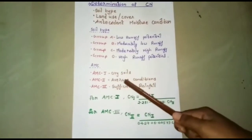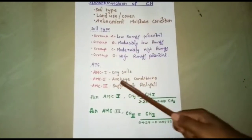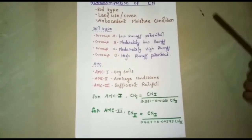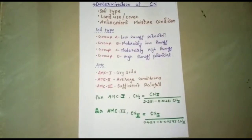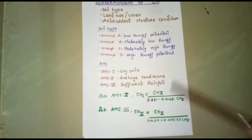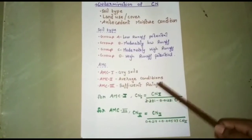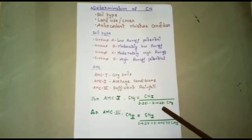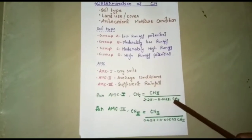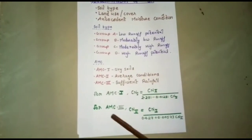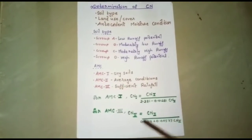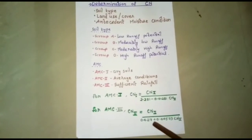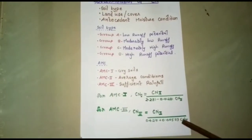The second factor is antecedent moisture condition. AMC1 is based on dry soils. AMC2 is based on average conditions of soils. AMC3 is based on soils with sufficient surface rainfall. For AMC1, the formula is CN1 equals CN2 divided by 2.281 minus 0.01281 into CN2. For AMC3, CN3 equals CN2 divided by 0.427 plus 0.00573 into CN2.